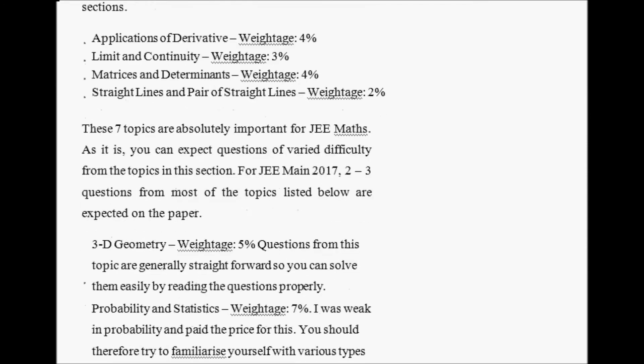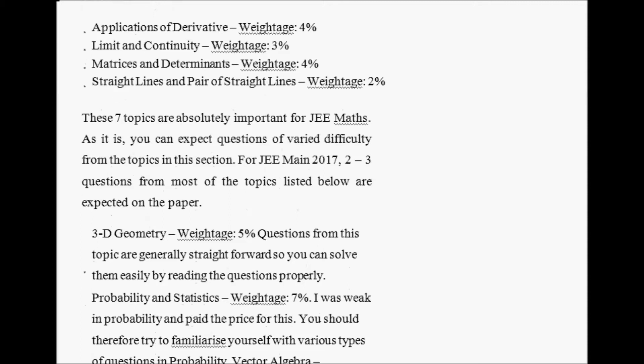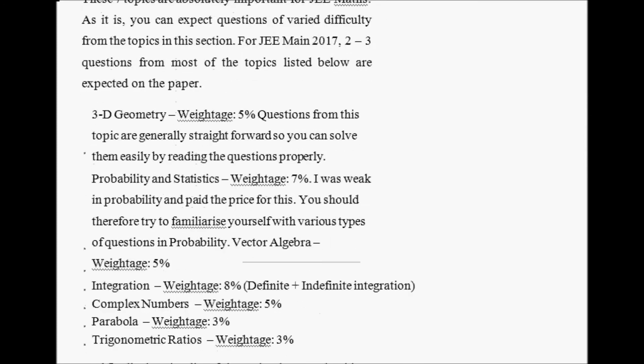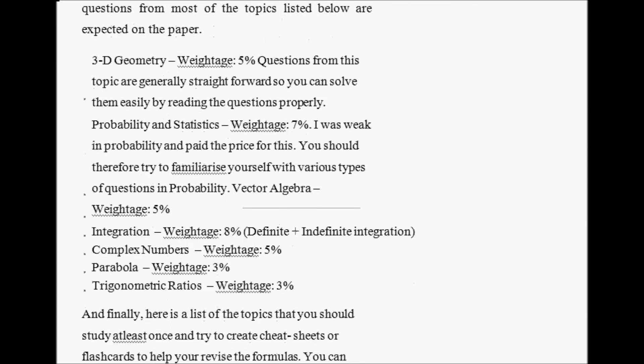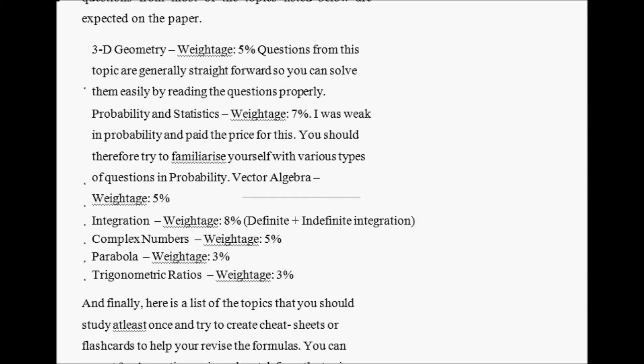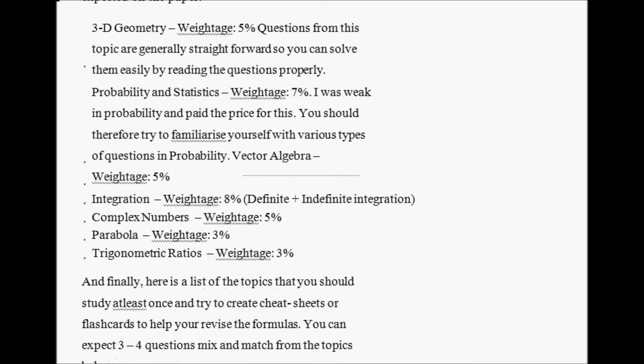You can expect questions of varied difficulties from the topics in this section for JEE maths. For example, talking about 2017-18, 2-3 questions from most of the topics listed below are expected on the paper, like Trigonometry - weightage 5%. Questions from these topics are generally straightforward, so you can solve them easily by reading the questions properly. Probability and Statistics - weightage 10%. I was weak in probability and paid the price for this. You should therefore try to familiarize yourself with various types of questions. Vector Algebra - weightage 5%. Integration - weightage 8%. Differential Equations and Units. Complex Numbers - weightage 5%. Parabola - weightage 3%. Trigonometric Ratios - weightage 3%.